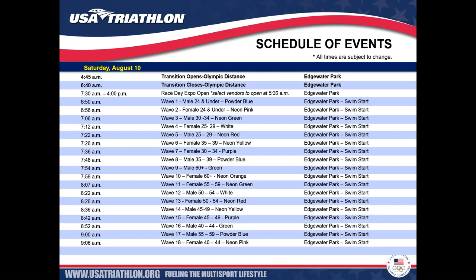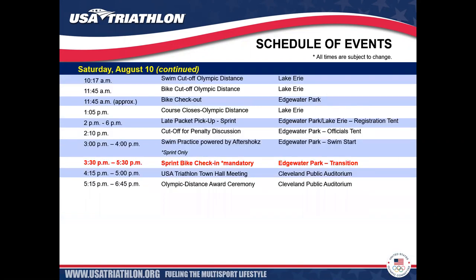The first wave starts at 6:50 with the last Olympic distance wave — wave 18, females 40 through 44 — going off at 9:06 a.m. There are specified cutoff distances for both swim and bike. Once the last bike is in off the course, bike checkout will open for all athletes — anticipated around 11:45 a.m. The course closes entirely at 1:05 p.m. Late packet pickup for sprint distance only will be from 2 to 6 p.m. Sprint swim practice powered by Aftershokz begins at 3 p.m. Sprint bike check-in — mandatory — is from 3:30 to 5:30 p.m. The USA Triathlon Town Hall meeting is from 4:15 to 5 p.m. at Cleveland Public Auditorium, followed by the Olympic distance award ceremony from 5:15 to 6:45 p.m.